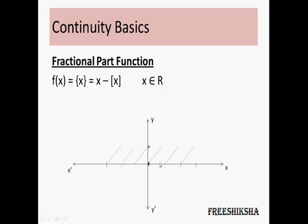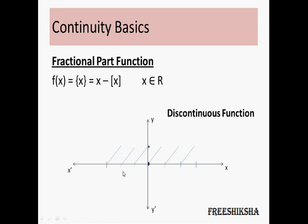Let's have a look at this next example with two continuous integral values. As soon as an integer is reached, this graph goes to 0 and then the process continues. So at every integer value this graph breaks — it loses its continuity. This is also an example of a discontinuous function.